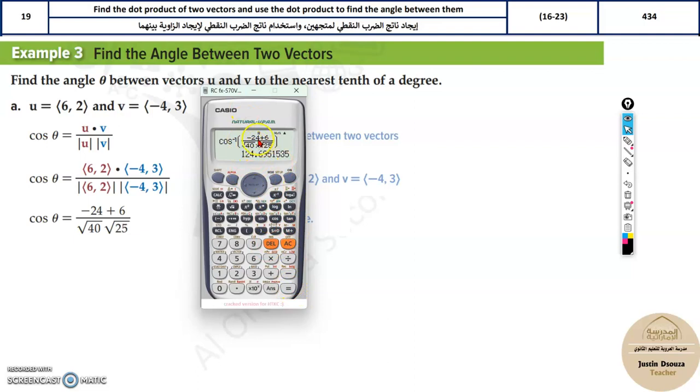Now you'll get the answer. If you add it up it will go beyond the range of cos inverse. So that's why I got an error. Whereas you need to put multiply. Don't do this mistake in the exam which I just now did.